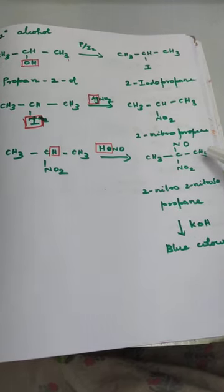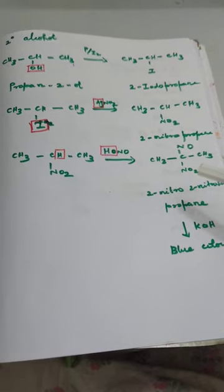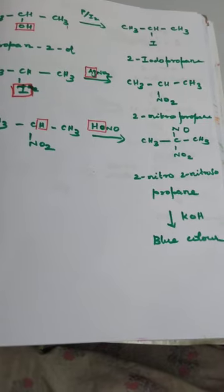The main product formed from secondary alcohol in Step 3 is 2-nitro-2-nitrosopropane. The second carbon carries both a nitro group and a nitroso group. The nitroso group is the NOH functional group. When this product is treated with KOH, it gives a blue color. This blue color indicates that the original compound was a secondary alcohol.